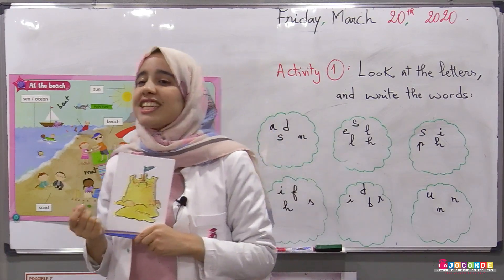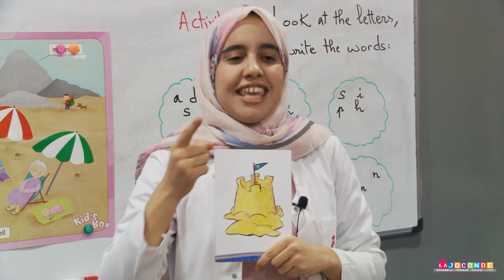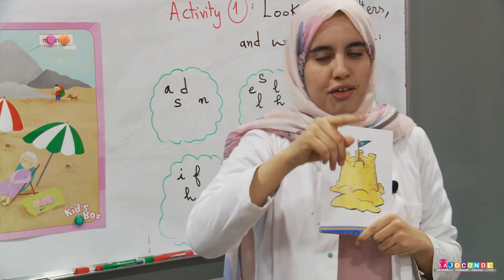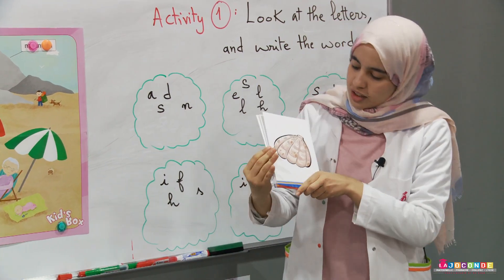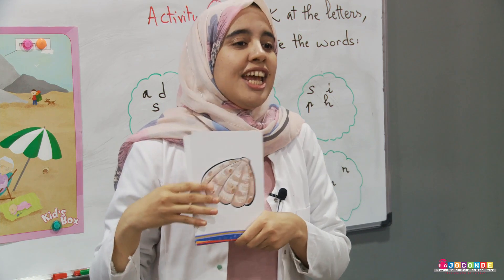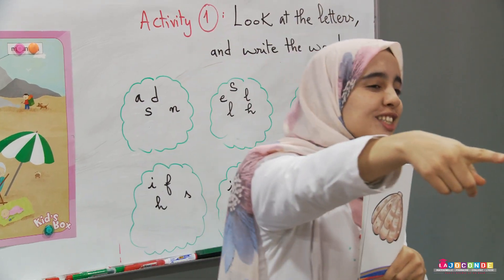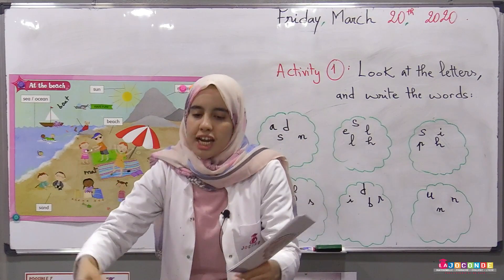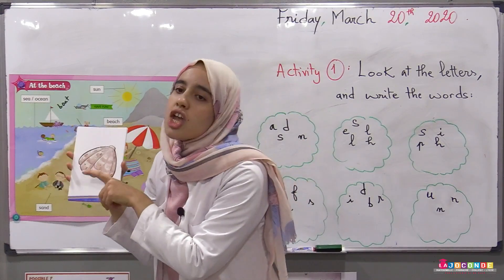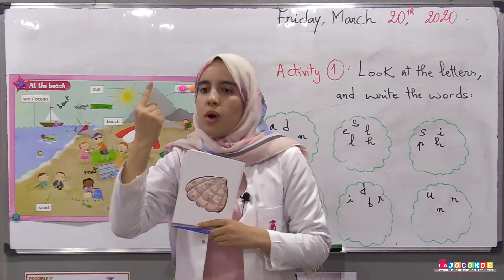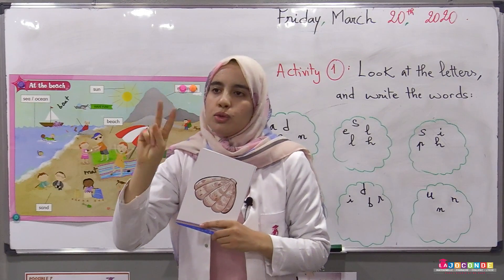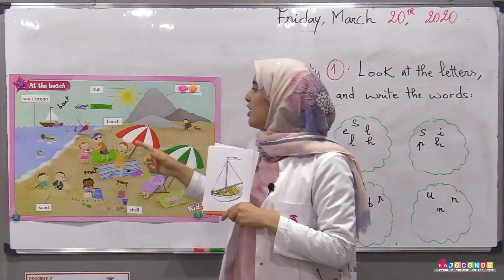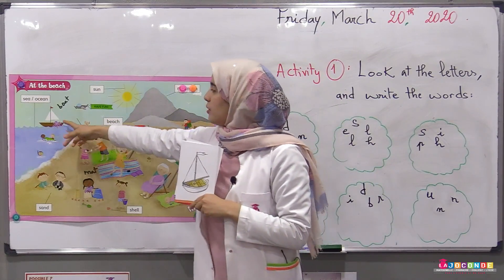Next: it's sand. Which color is the sand? Yes, great — it's yellow, we can say yellow or golden. And we can also find a shell. Do you like to collect shells? Yes, I like it too! One shell, two shells.